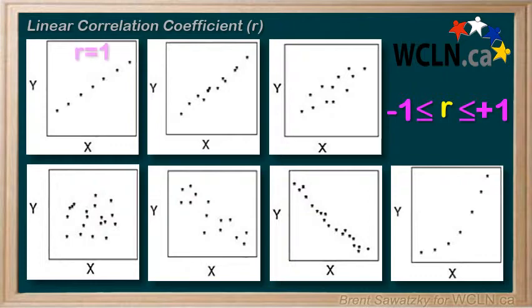In this first graph, R equals 1. It's a perfectly linear set of data, not really very common in the real world. If you collected data in the real world, the chances of you having no errors or variations like this would be pretty slim. Thus, to get an R of exactly 1 is quite uncommon.